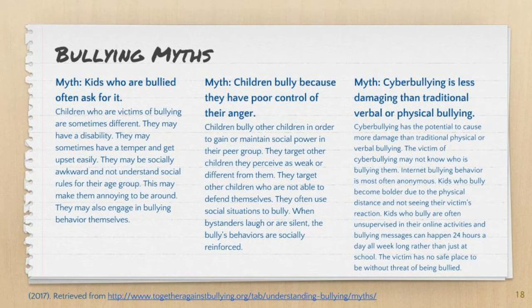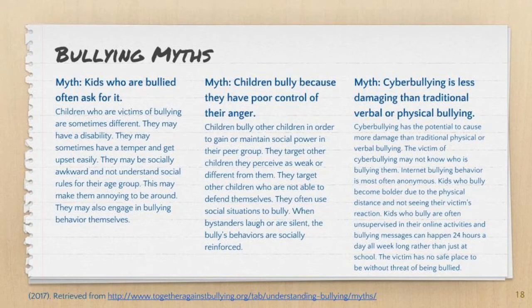The next myth is that children bully because they have poor control of their anger. Children who bully other children do so to gain or maintain social power in their peer group. They target children they perceive as weak or different — kids who are socially awkward or don't understand social rules — and who are not able to defend themselves. When bystanders don't step up, when they are silent or when they laugh witnessing those behaviors, that becomes socially reinforcing for the person to continue bullying others.